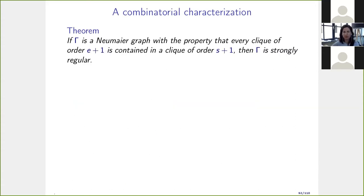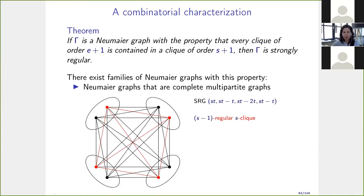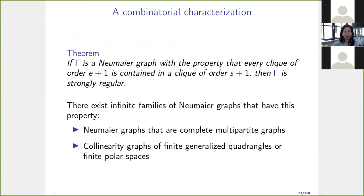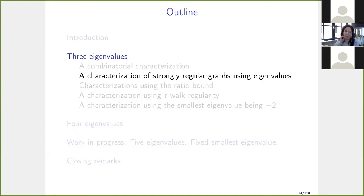The proof sketch: from the stated property we can prove the graph has diameter two (recall Neumeier graphs have diameter two or three), then show the number of cliques of size s+1 through any edge is constant, and finally apply a result from the intriguing sets paper on regular graphs of diameter two to conclude strong regularity. Examples satisfying this condition include complete multipartite graphs and collinearity graphs of finite generalized quadrangles or finite polar spaces.